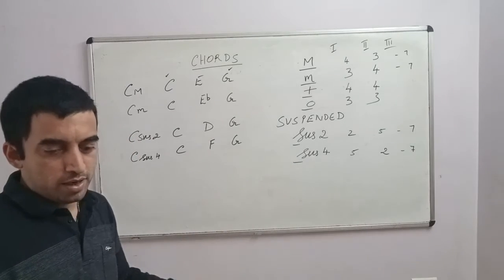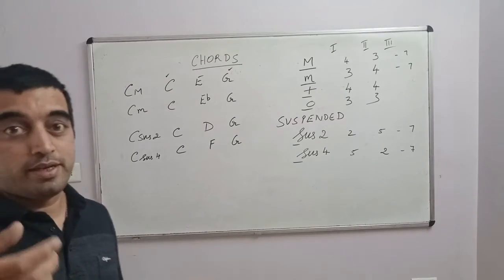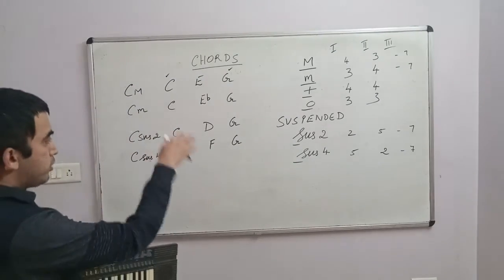Now if you can recollect, this is a song by Brian Adams. It is called 'Summer of '69.' And of course it is played on the guitar, but I just wanted to impress upon you how different chords, when played in a sequence, sound so nice.